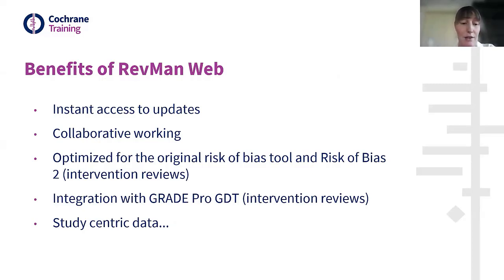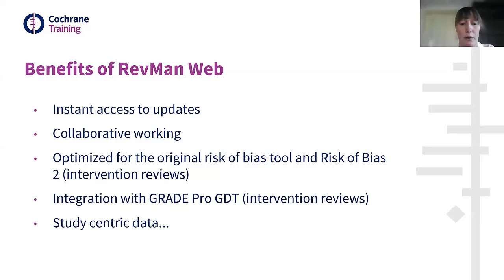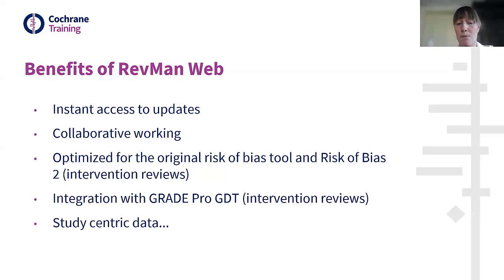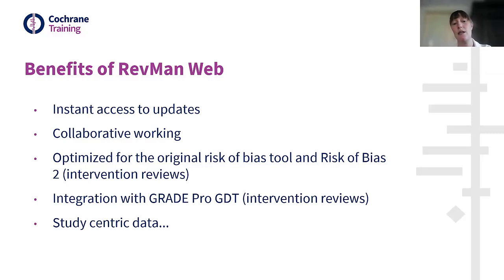Some of the benefits of using RevMan Web include: authors can now work collaboratively on a review at the same time. For intervention reviews, Risk of Bias 2 is optimized within RevMan, and authors can integrate the review with GRADEpro GDT to create Summary of Findings tables based on data in RevMan. If you update your analysis data in RevMan, you can push that into the GRADEpro table without any manual work. And finally, study-centric data is now the default for all new reviews.